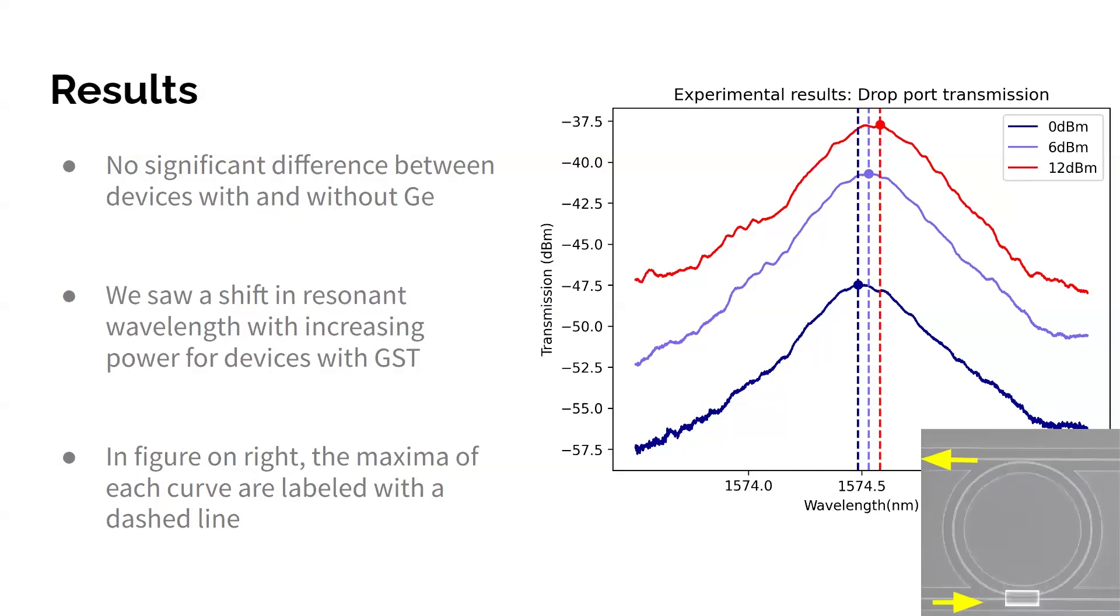So it kind of matches what we expect from the simulations. If there was no thermo-optical material, we would just see that these curves shift directly up without any change in the resonance wavelength. So the reason why this is happening is at higher powers, there is a greater temperature change leading to a greater shift of resonance wavelength.